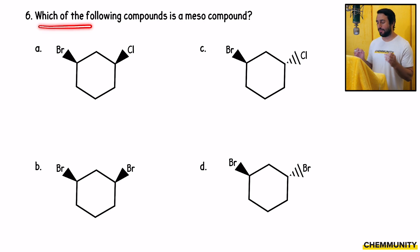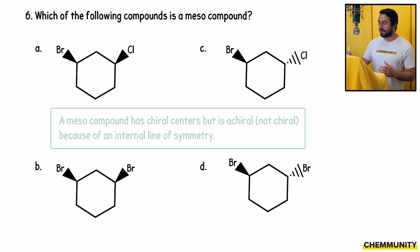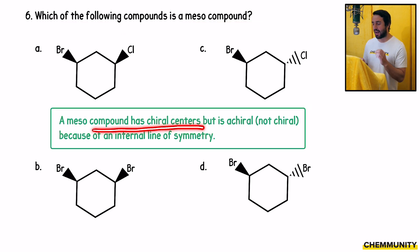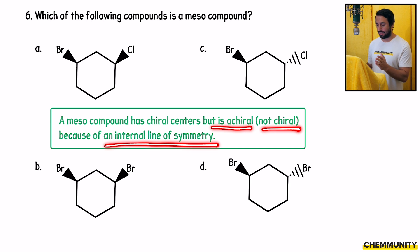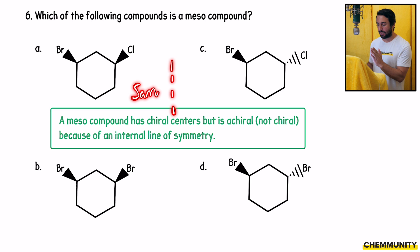Number six asks, which of the following compounds is a meso compound? A meso compound is a compound that has chiral centers, but is achiral or not chiral overall, because of an internal plane of symmetry. If there is a line that you can draw down the middle of the molecule, and one half of the molecule reflects across that mirror plane to give you the other half of the molecule, that is a meso compound. So certainly, these all have two substituents in the same places, but they're different substituents, and they're oriented differently.